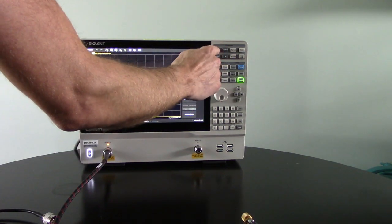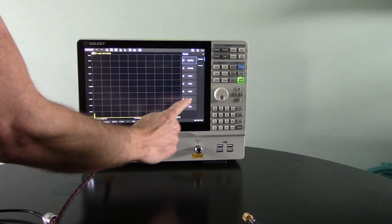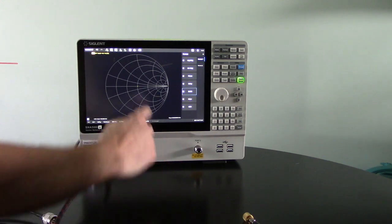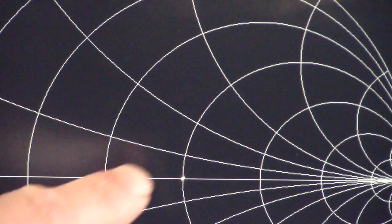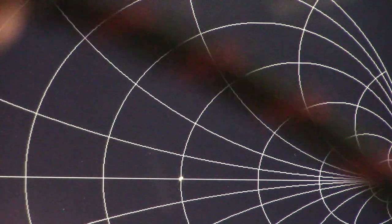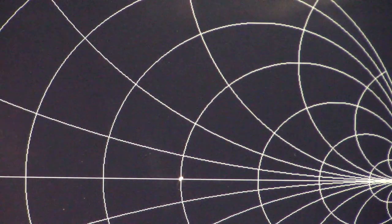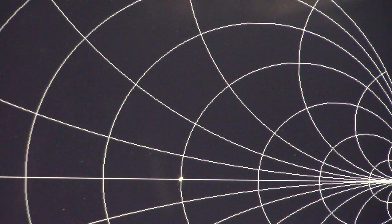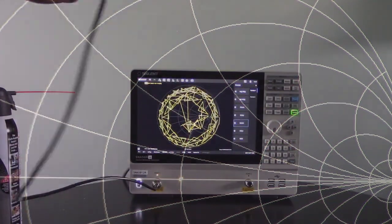We will now switch the view over to the Smith chart and complex impedance with the Smith chart S11. You'll see the characteristic impedance is this little yellow dot in the center with a 50 ohm load. That is a very good calibration. You'll see as we shake the cable that is not changing at all. And this is a sweep over eight and a half gig.